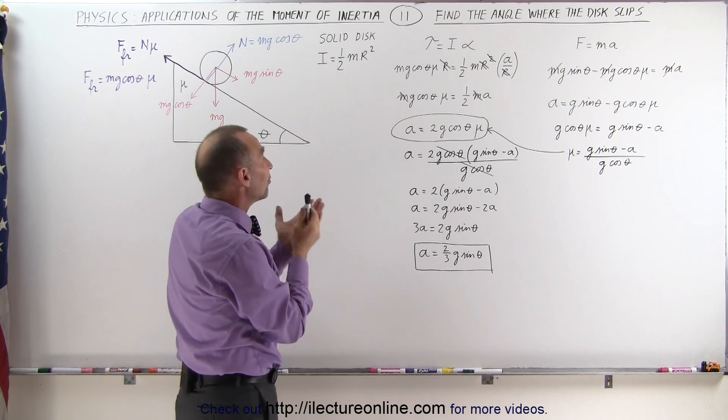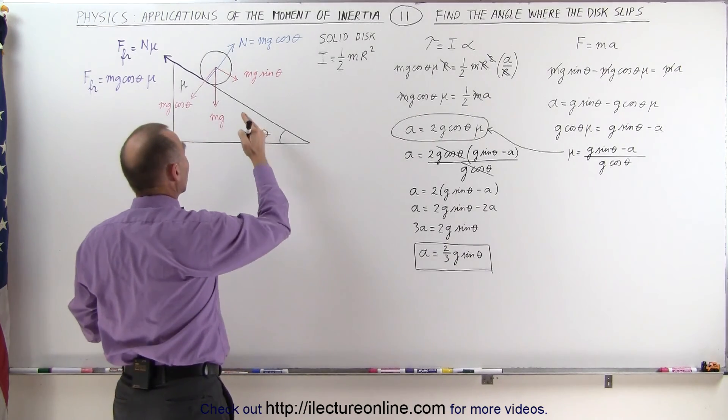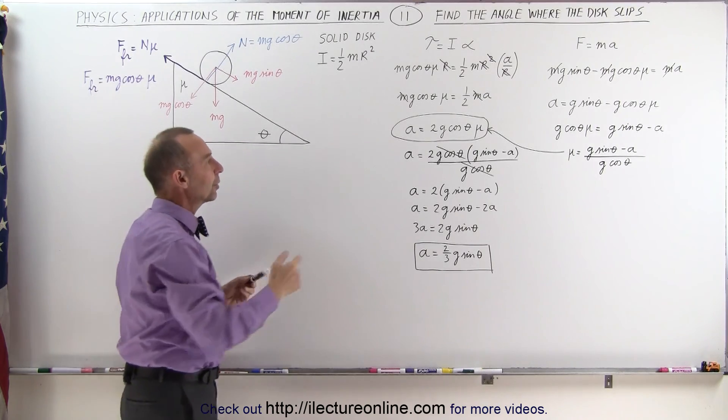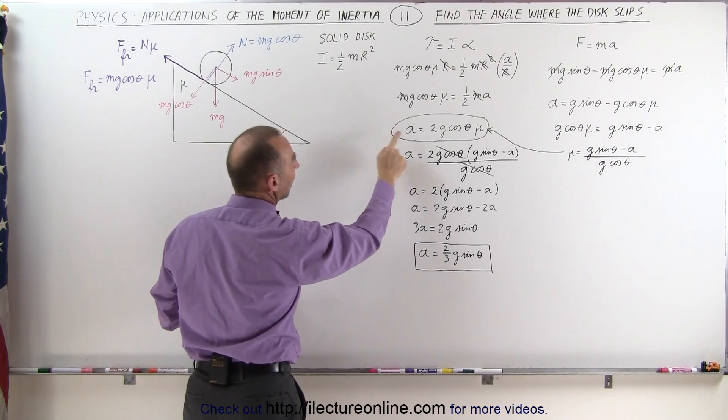But now what we want to do is find out at what point, at what angle, the cylinder will begin to slip rather than roll down the incline. So we're going to take this equation right here and solve it for mu.